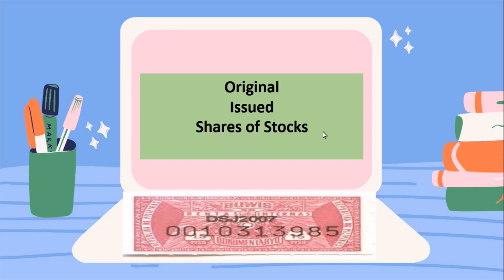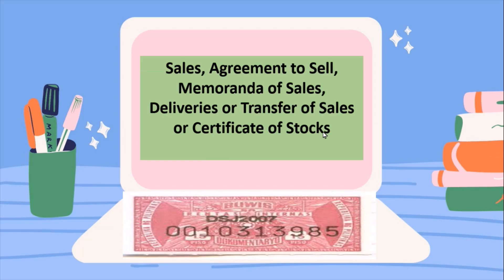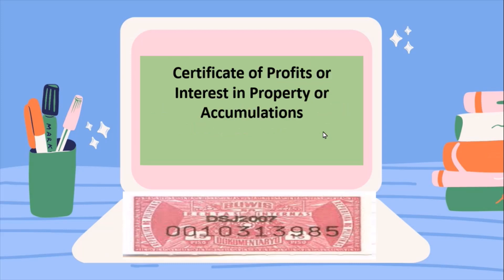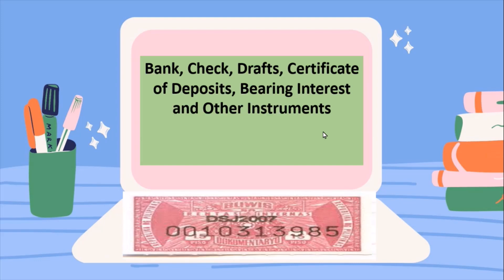We have different types of documents subject to Documentary Stamp Tax. The first is the original issuance of shares of stock. Then we have sales agreements, agreements to sell, memoranda of sale, deliveries or transfers of shares or certificates of stock. We also have certificates of profits or interest in property or accumulations, bank checks, drafts, certificates of deposit bearing interest, and other instruments subject to documentary stamp tax.